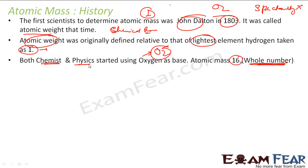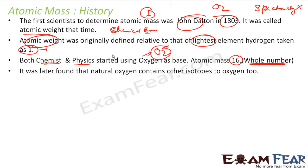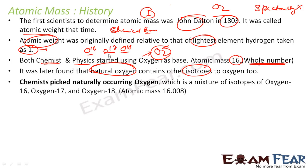Physics also adopted oxygen. But then they found that natural oxygen has other isotopes — oxygen-16 was not the only one; they also had oxygen-17 and oxygen-18. Thus, the atomic mass of oxygen used in reactions is not exactly 16, but approximately 16.008. I will explain later how to calculate the atomic mass when an element has multiple isotopes.